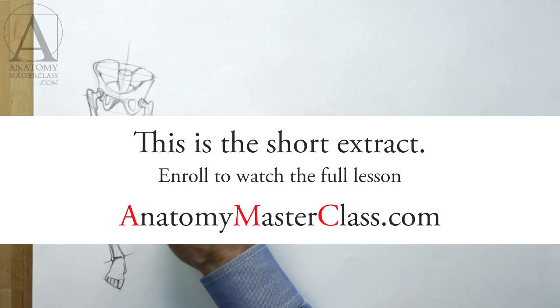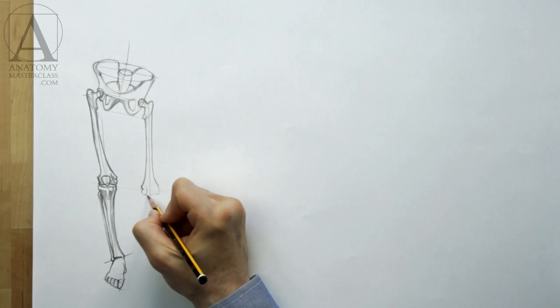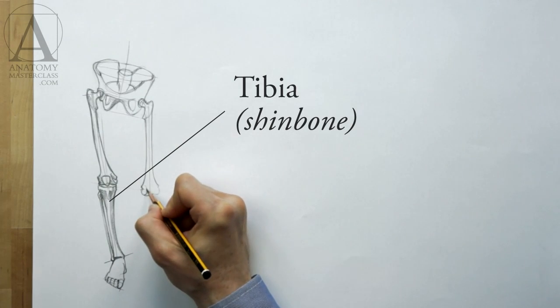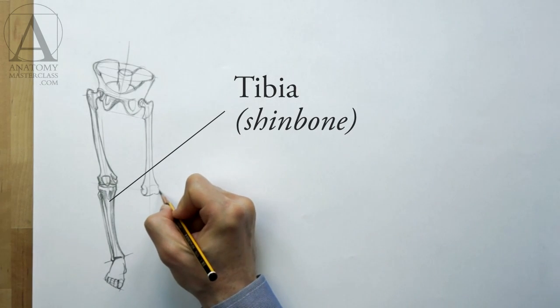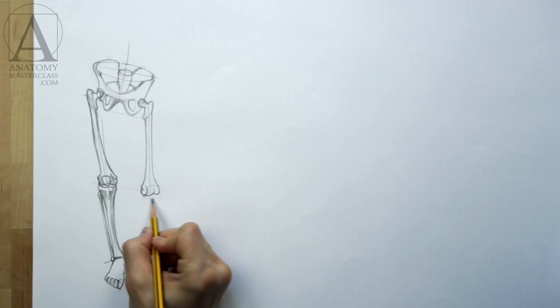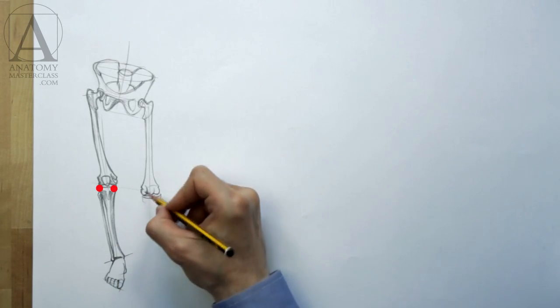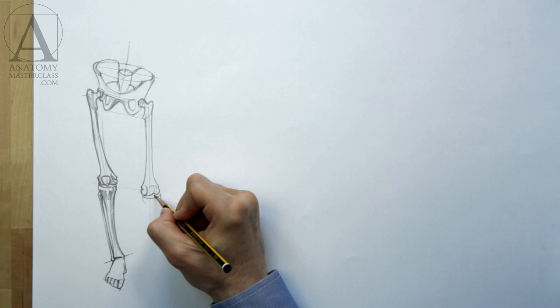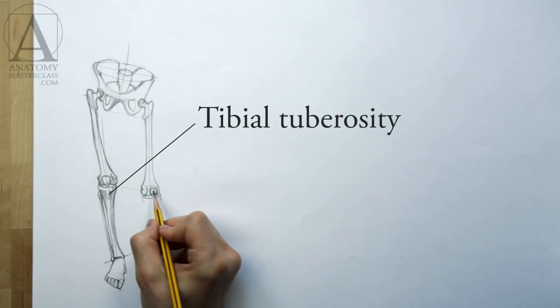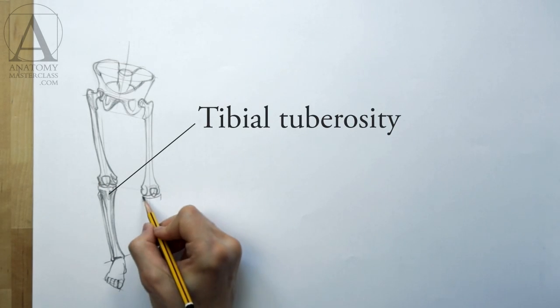The lower leg has two bones. The larger one is called the tibia, or the shin bone. This bone is also wider at the knee joint. The two bony projections of the tibia are also called the condyles. The tibial tuberosity is located beneath the kneecap.